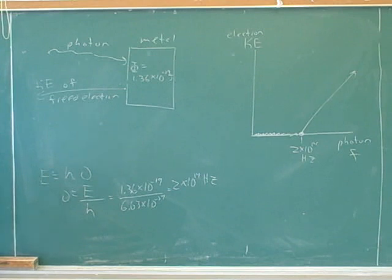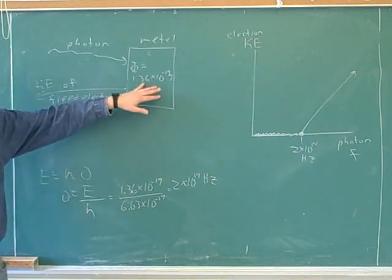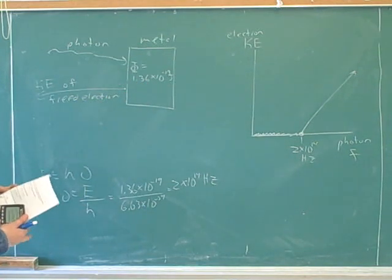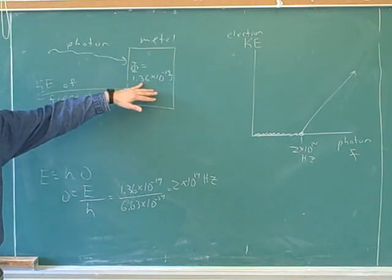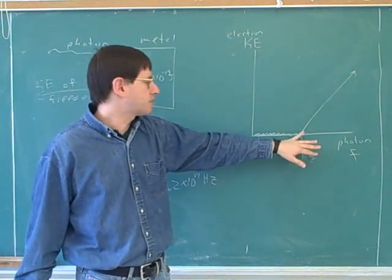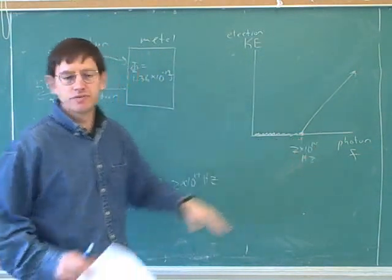So, what we just figured out is, if the photon has a frequency of 2 times 10 to the 14 hertz, it will have an energy of 1.36 times 10 to the negative 19 joules. And then, it would use up all of that energy, freeing the electron, and there won't be any energy left over to put into kinetic energy. So, that's why, at this point, we still have a kinetic energy of zero.